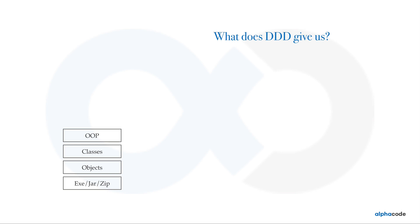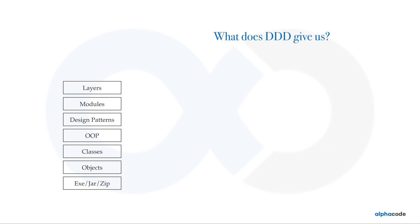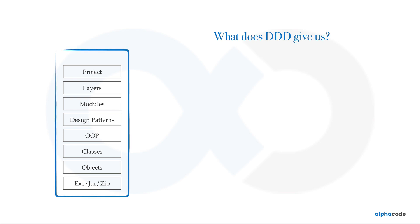Above that, you have objects and methods, then abstracting those you have classes, then object-oriented principles like interfaces and inheritance. Above that, you have design patterns, which tell you how to design your code using those OOP principles and your classes. Then you have modules, and each module follows some design pattern. Then you have layers — MVC, services, controllers, DAO layers — and finally your project. Most software developers only think of this whole stack as 'software.'